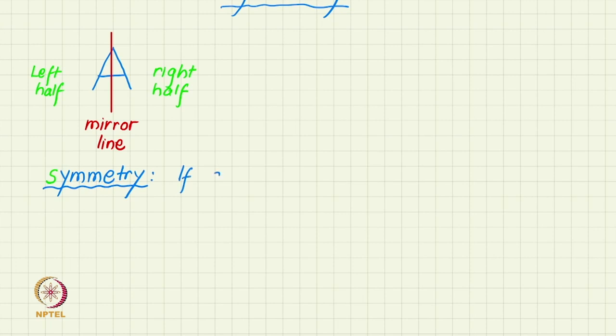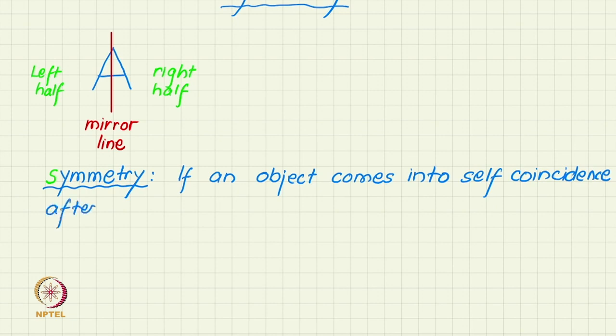Let us say that if an object comes into self-coincidence, for example the letter A came into self-coincidence, after a geometric operation.